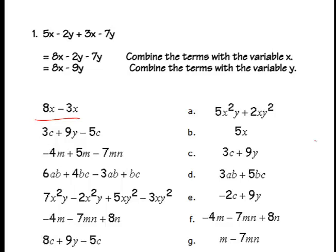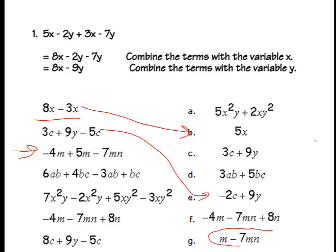Let's do some matching. 8X minus 3X equals 5X. Next: 3C plus 9Y minus 5C — we combine the C's: 3 minus 5 is negative 2C, plus 9Y. Answer: negative 2C plus 9Y. Next: negative 4M and 5M are the bananas — negative 4M plus 5M is 1M — minus 7MN. It says just M, which is fine because 1M and M are the same thing.